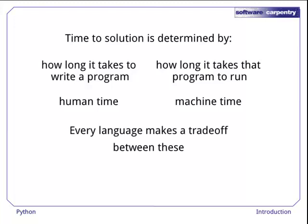Every programming language makes a trade-off between these two types of time. High-level languages like Python and MATLAB try to make programming itself faster by doing more for you. Low-level languages like Fortran and C, on the other hand, do less for you, but also hide less from you, which allows for greater optimization. And in between, there are languages like Java and C Sharp, which do some things automatically, but leave others in your hands.